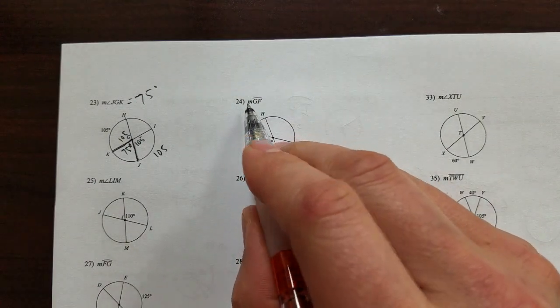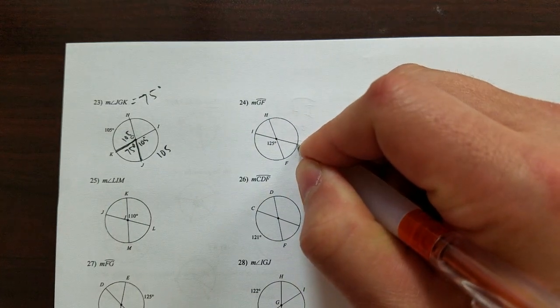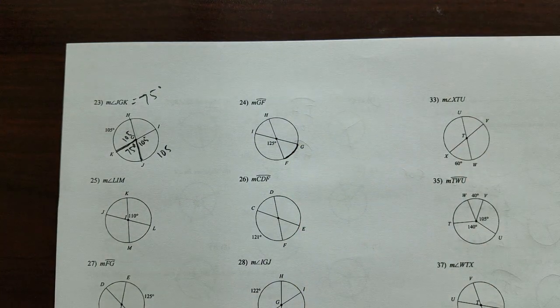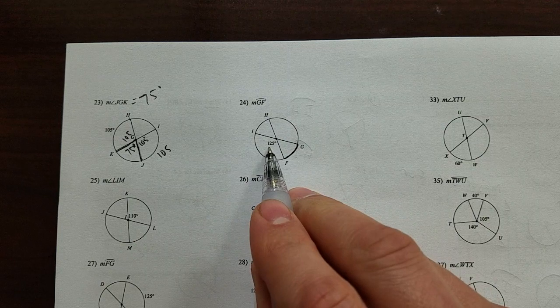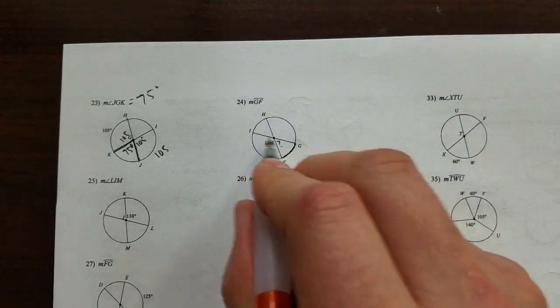This one says measure of GF. It's only two, so it's the minor arc GF. It's another supplementary problem. That's 125, and that's a straight line. Then what's this angle have to be to make 180?